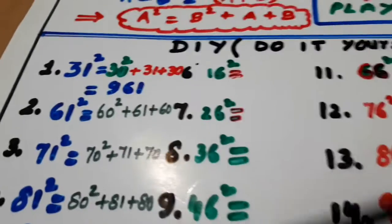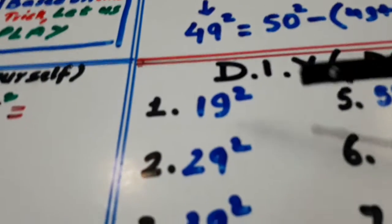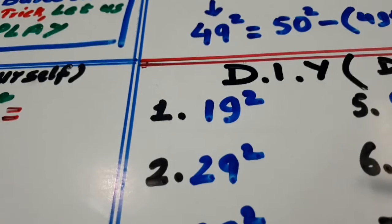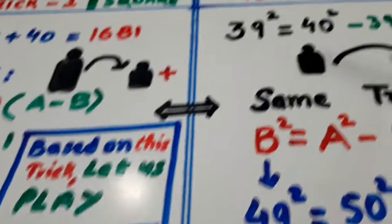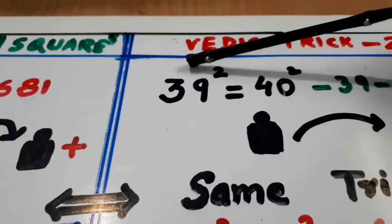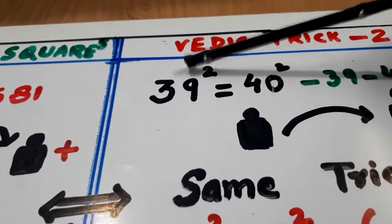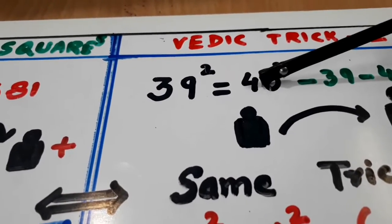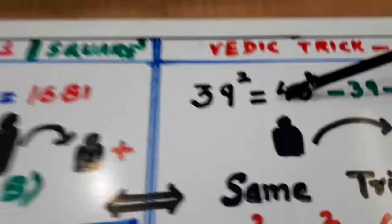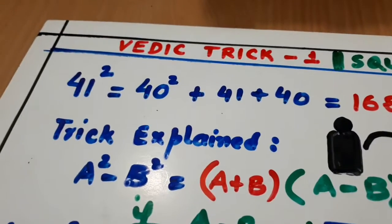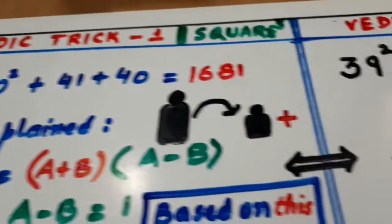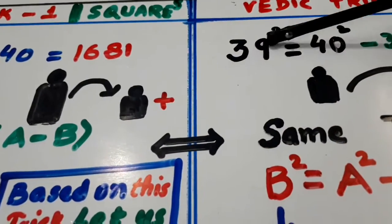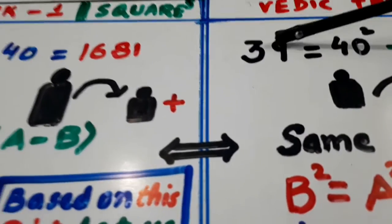These all questions are based on this. This also is based on this. Ab iske anndar, look here. Supposing aapko 39 ka square nikalna hai. Ab bada hai dhar rakh chato. Athala bhai, vohan pe pehle 41 bada tha. 40 chota tha. Ab dhekho, yaa peh 39 chota hai, 40 bada hai. Udha kam ho gya.